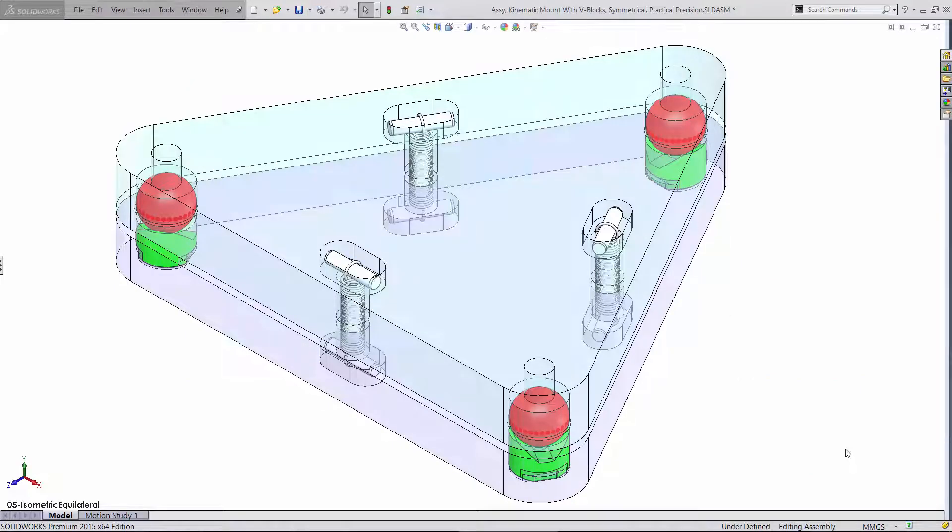This is a Maxwell style kinematic mount which uses three balls and three V grooves to establish six points of contact, exactly constraining the top plate relative to the bottom.